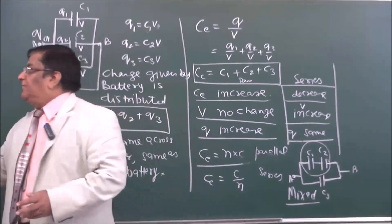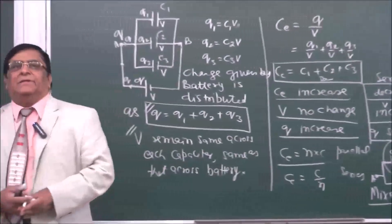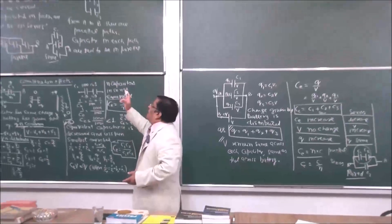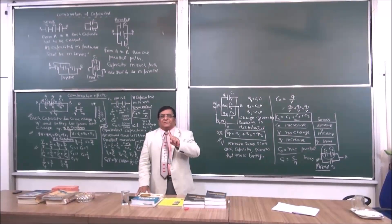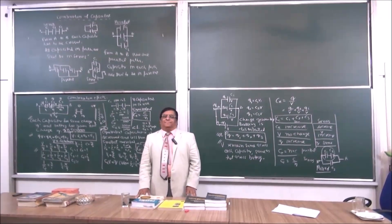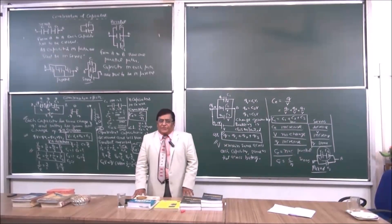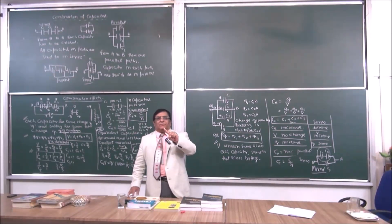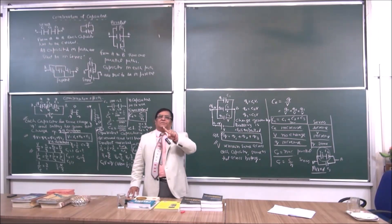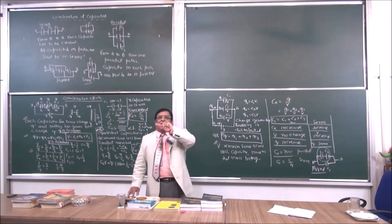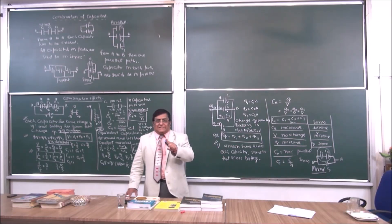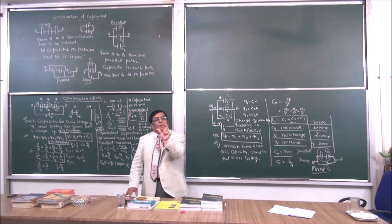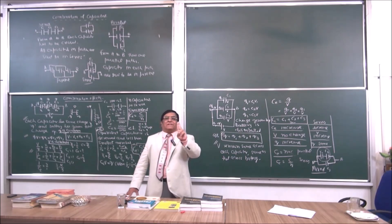What we have studied so far is how to combine capacitors. There are two methods: series and parallel. Geometrically, in series you pass through each capacitor; in parallel there are parallel paths between two points. Series and parallel are always decided with reference to two specific points between which the capacitors are combined.